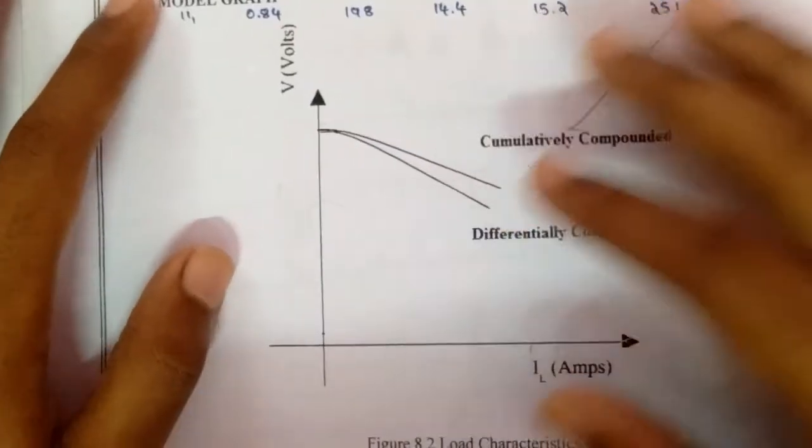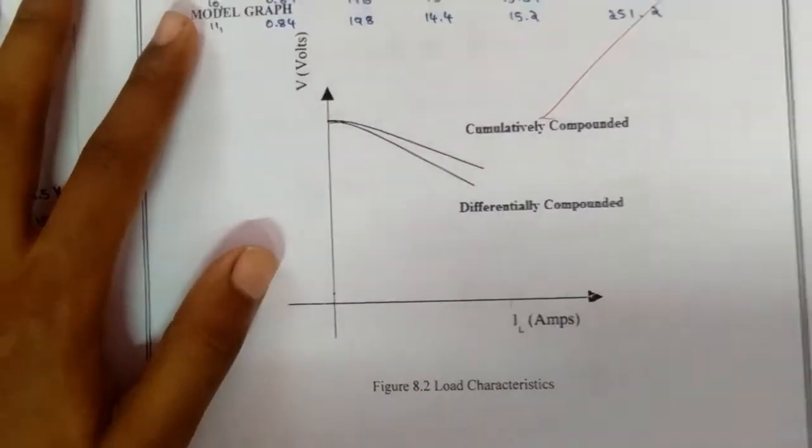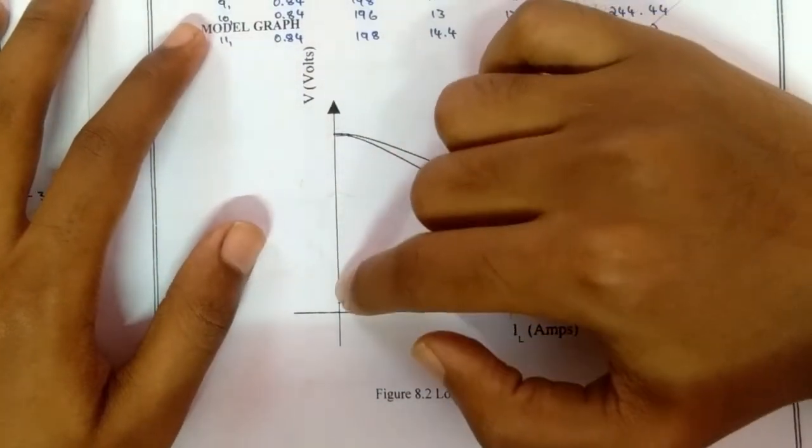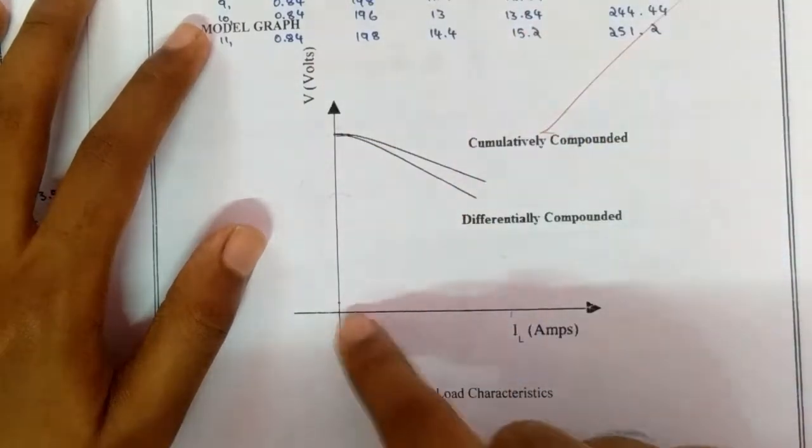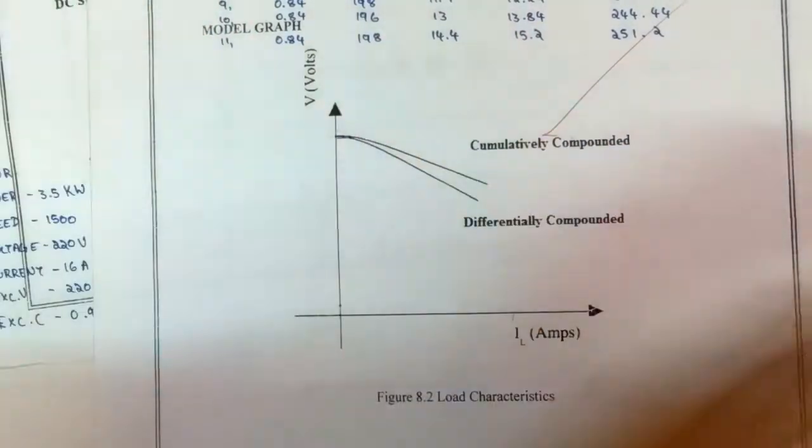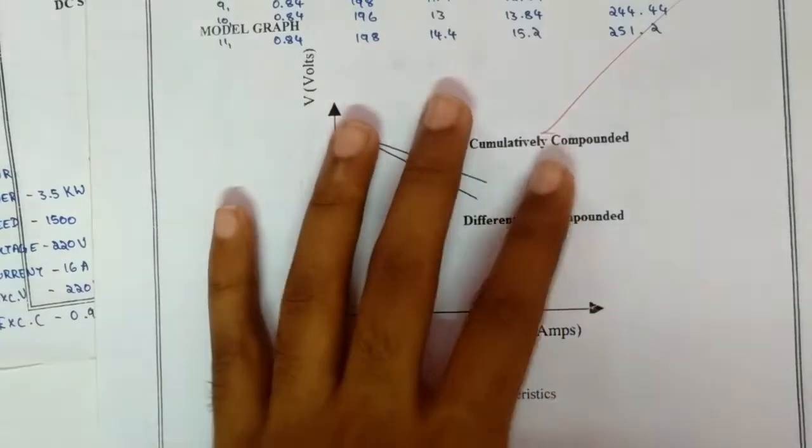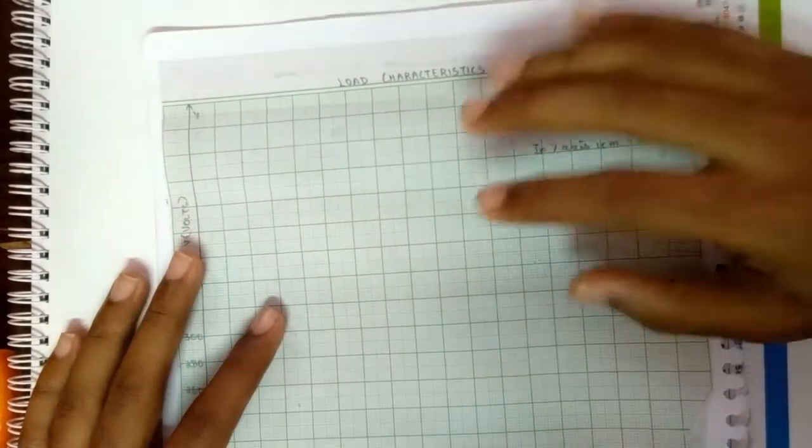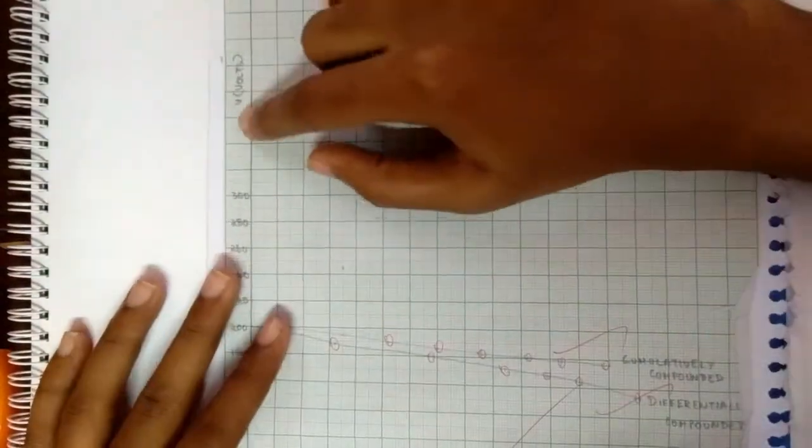The graph will look like this one. So the load characteristics graph will be drawn between voltage in y-axis and the current IA in x-axis. For the load characteristics curve, I have taken in y-axis voltage and in x-axis IL.